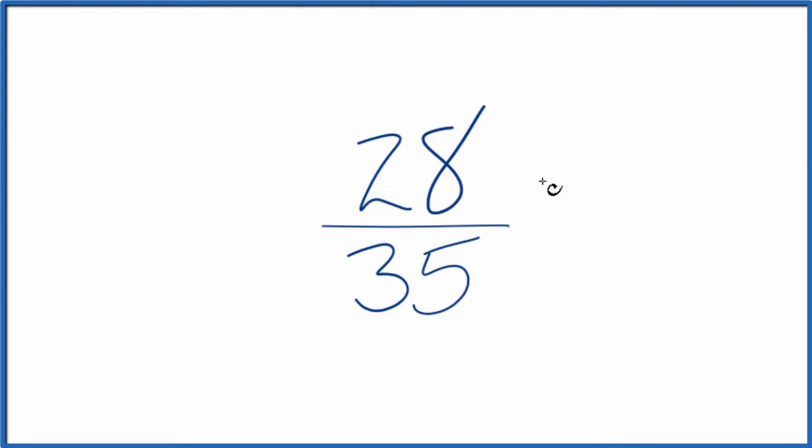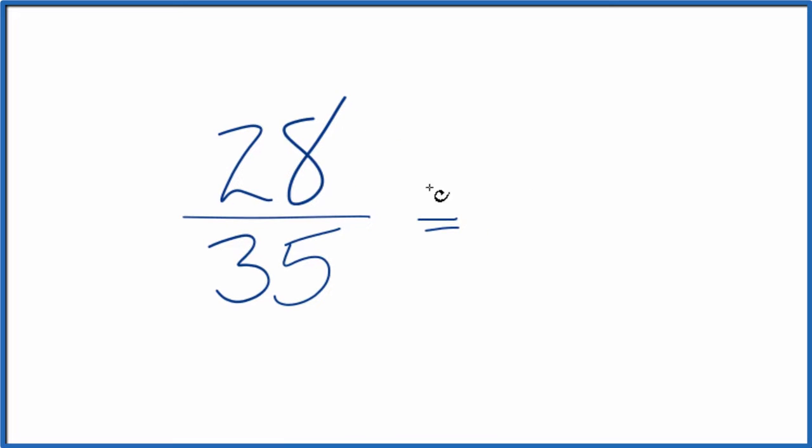You might recognize that 7 will go into 28 and 35 evenly. So if you know your multiplication tables, 28 divided by 7, that's 4, and 35 divided by 7 is 5.